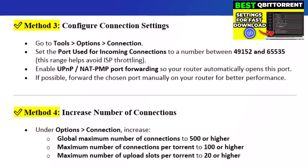Step 3: Configure Connection Settings. Go to Tools > Options > Connection. Set the port used for incoming connections to a number between 49,152 and 65,535 — this range helps avoid ISP throttling. Enable UPnP/NAT-PnP port forwarding so your router automatically opens this port. If possible, forward the chosen port manually on your router for better performance.